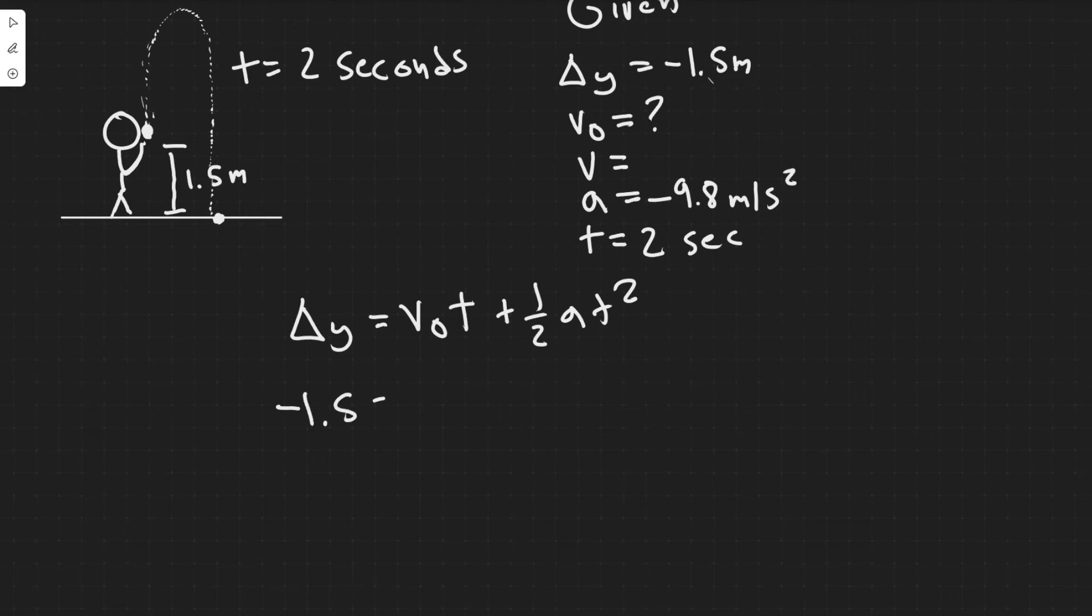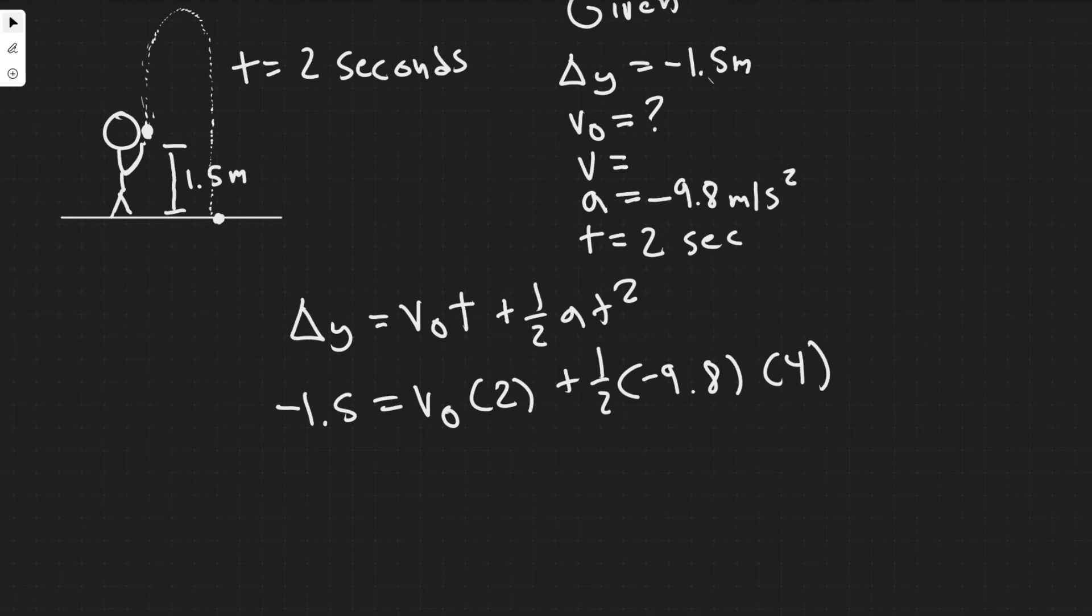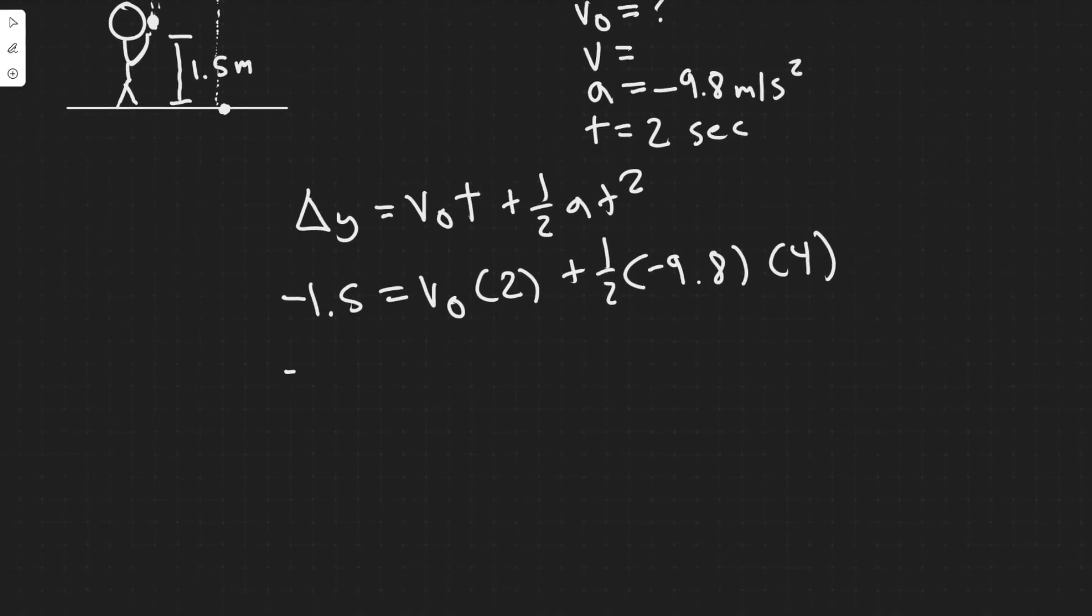Delta y is minus 1.5. The initial velocity is what we're solving for, so I'll leave it there. The time is two seconds, plus one-half times a, which is minus 9.8, times t squared. So two squared is just four, so I'm going to leave it like this. And so now it's just a matter of solving, so I'm going to go ahead and simplify.